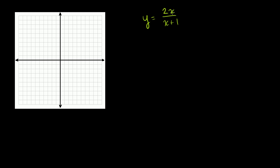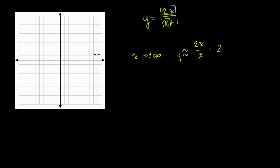All you have to do is look at the highest degree term in the numerator and the denominator. The highest degree term here is 2x, and the highest degree term in the denominator is x. They're both first degree terms. So as x approaches infinity, y is going to be approximately equal to 2x over x, which is just equal to 2. That's also true as x approaches negative infinity. So as x gets really large or super negative, this is going to approach 2. So let's graph that horizontal asymptote: y is equal to 2.